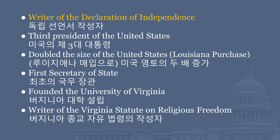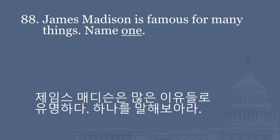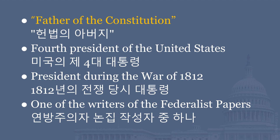First Secretary of State. Founded the University of Virginia. Writer of the Virginia Statute on Religious Freedom. James Madison is famous for many things. Name one. Father of the Constitution. Fourth President of the United States. President during the War of 1812. One of the writers of the Federalist Papers.